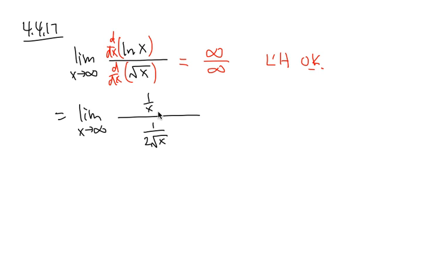Let us multiply everything by the lowest common denominator of the small fractions. Namely, I have to multiply 2x and square root of x together. So I'll do that on the top, and I'll also do that on the bottom.